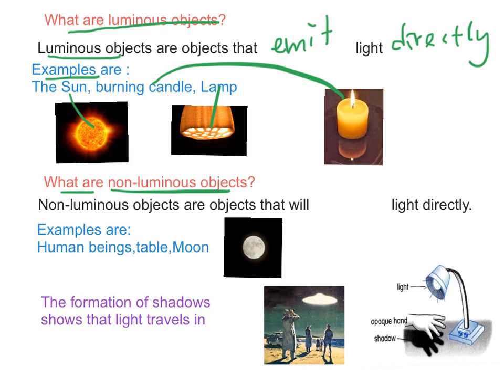Then, what are non-luminous objects? Non-luminous objects are objects that will not emit light directly. Examples of non-luminous objects are human beings, table, and the moon.